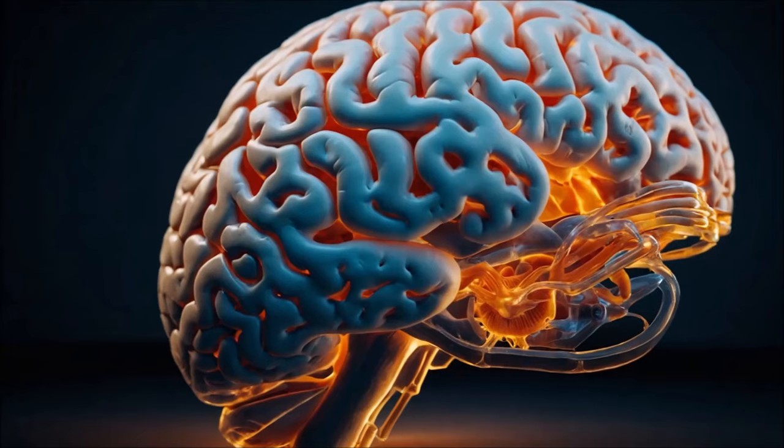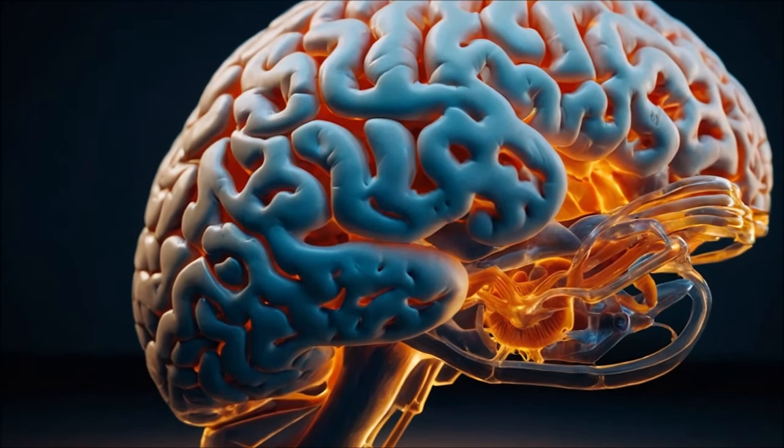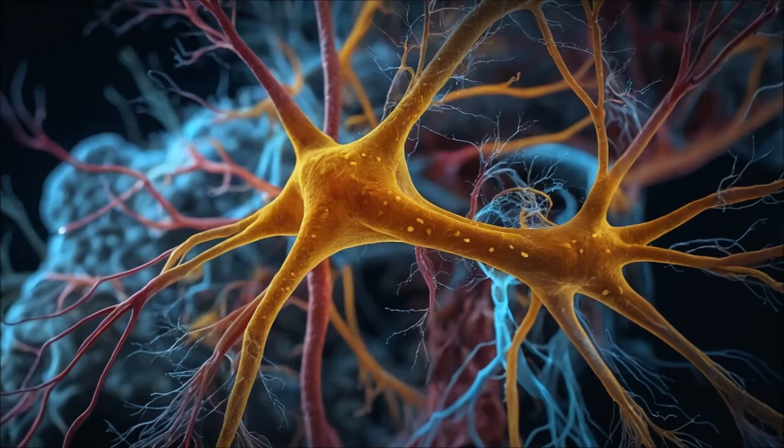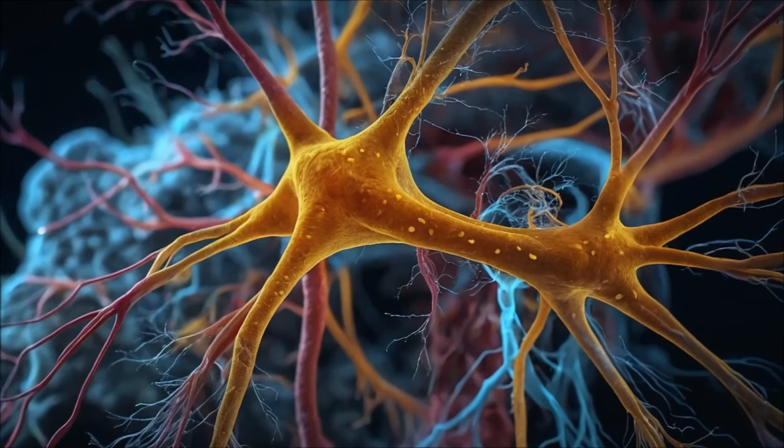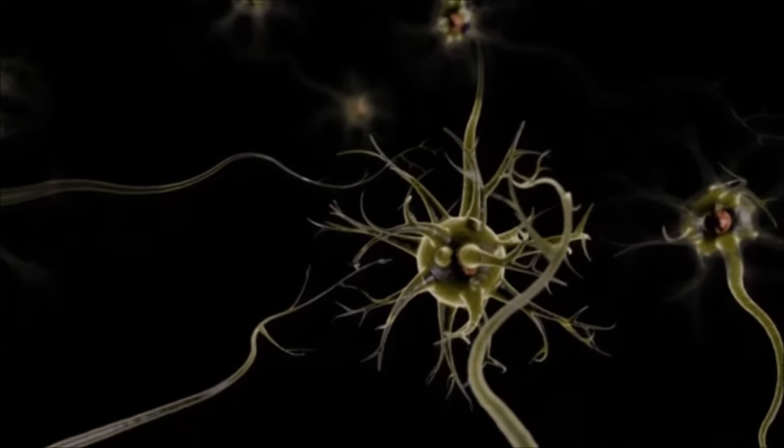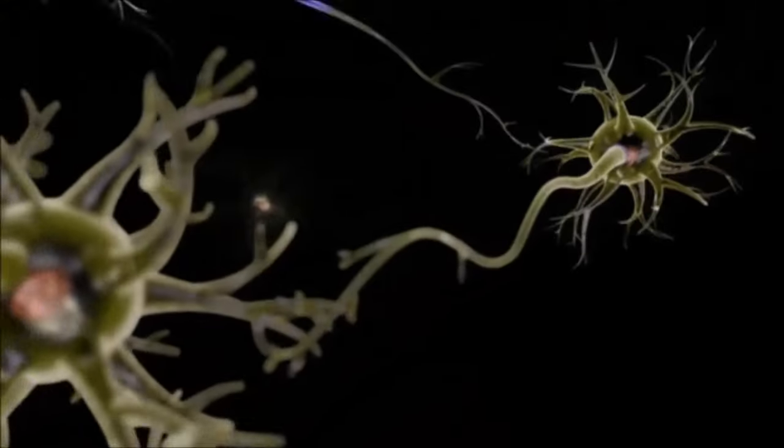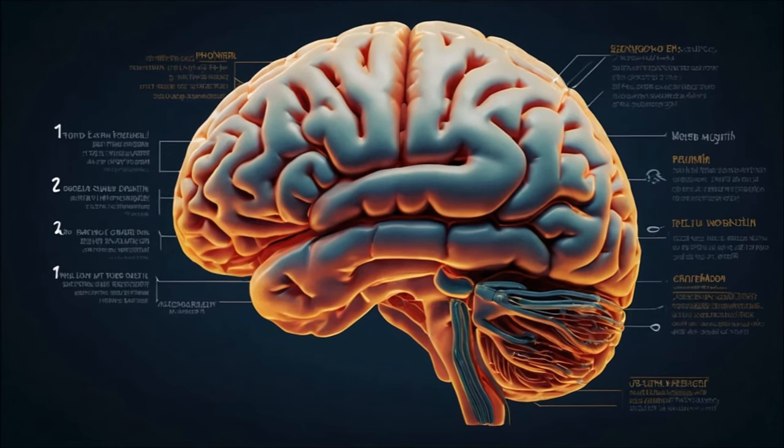The brain is the central control point for emotions. Emotions are a result of complex interactions between various regions of the brain. A series of structures called the limbic system plays a crucial role in the formation and regulation of emotions. Our emotional experiences can be seen as a dance of chemical and electrical signals within the brain.